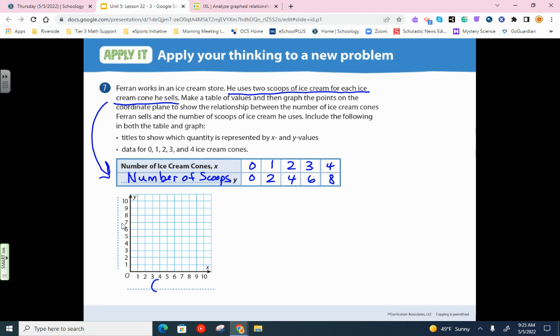Your x-axis is going to be your cones. Your y-axis is going to be your scoops. So let's graph these. So again, these are the ordered pairs. Zero, zero, one, two, two, four, three, six, and four, eight. So I've got zero, zero, one, two, two, four, three, six, four, eight. We've got those graphed right there.